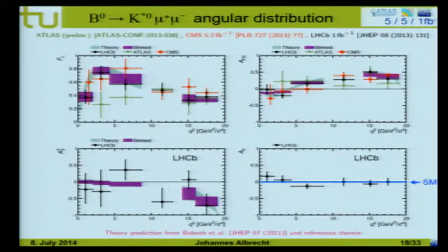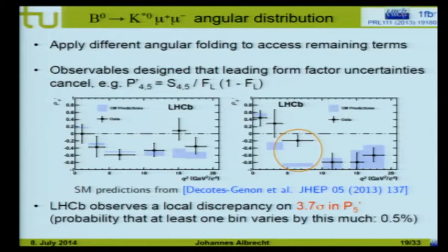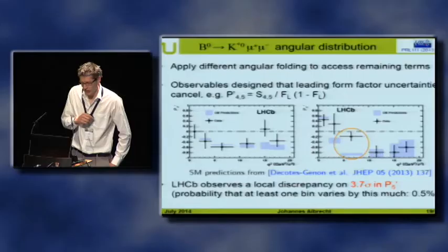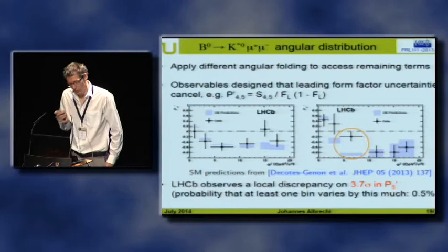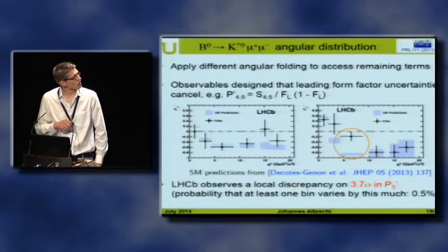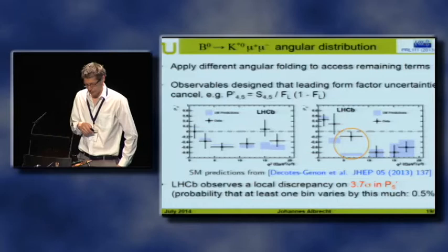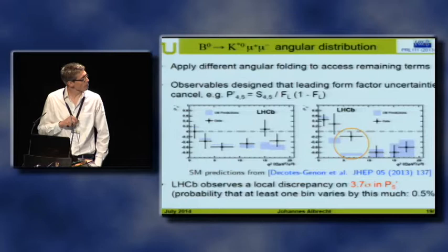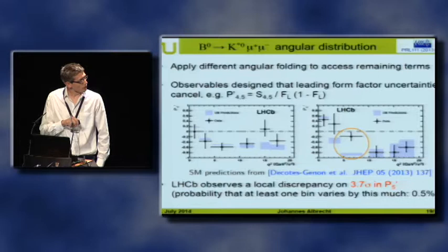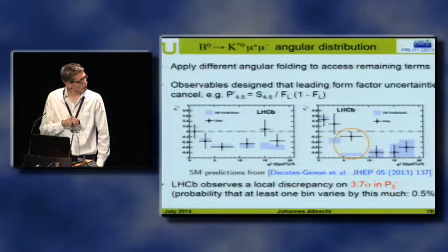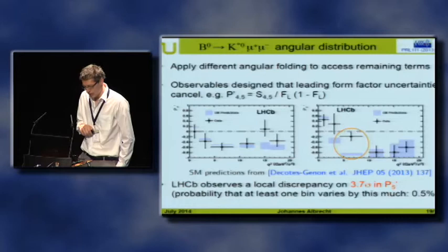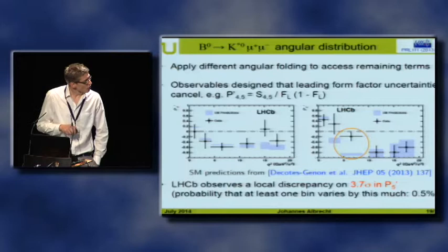LHCb also performed a different angular folding to access four other observables. In this analysis, the observables are modified to more complex quantities designed such that form factor uncertainties cancel at leading order, making the theory input cleaner and easier to discover potential disturbances. LHCb measured four different such observables, and in general the agreement is very good. However, there is one observable called P5 prime where an anomaly is observed — a quite large disagreement with the theory prediction, a local discrepancy of 3.7 sigma, which has caused quite some interest.